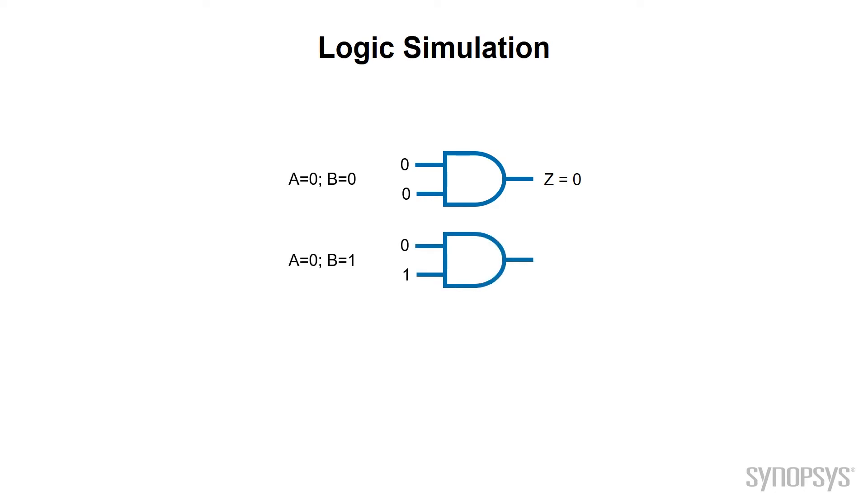Now change B to a 1 and check the output. Good, the output is still 0. Change A to 1 and B to 0 and check the output. Still good. Finally, let's set A to 1 and B to 1. And now the output is 1. This would appear to be an AND gate.